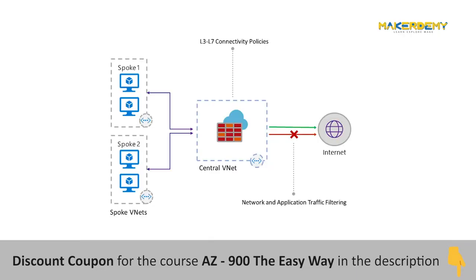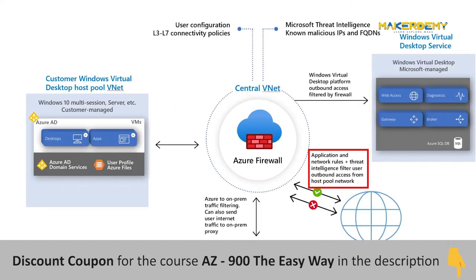Allow or deny network filtering rules can be created by source and destination IP address, protocol, and port. Allow and deny rules can also be created to control the HTTP or HTTPS traffic for your application.